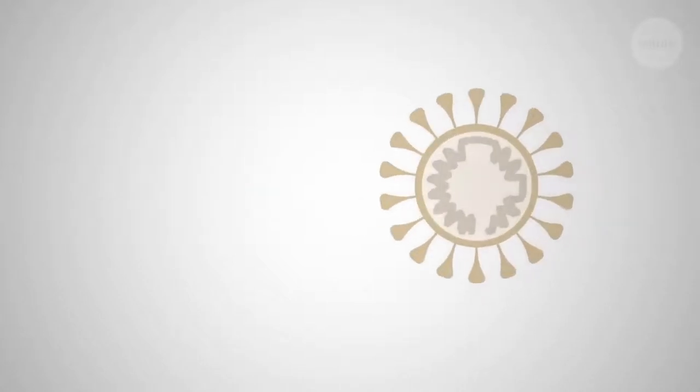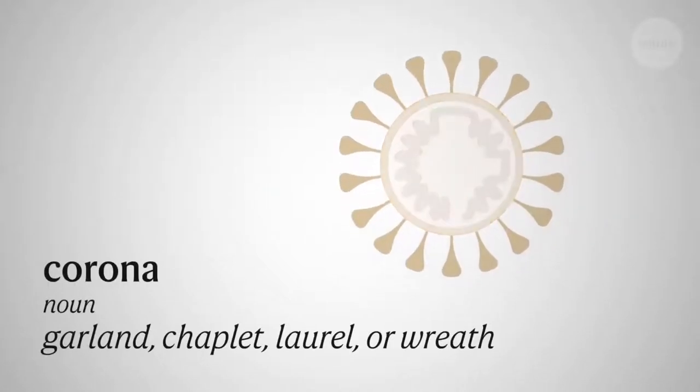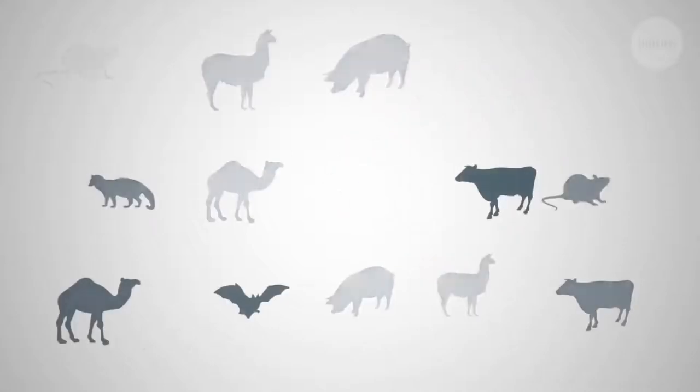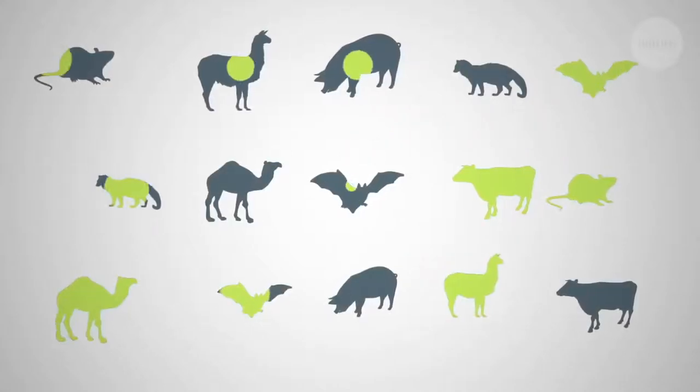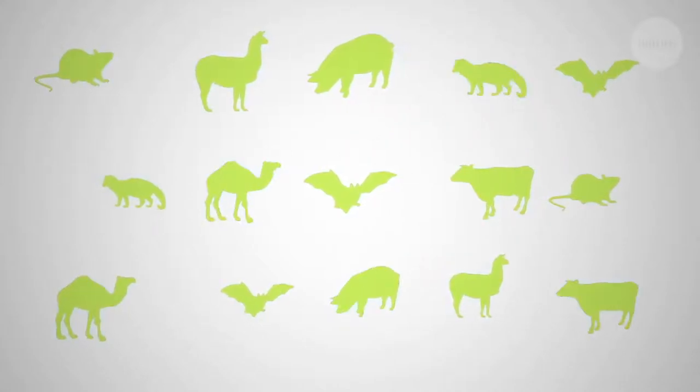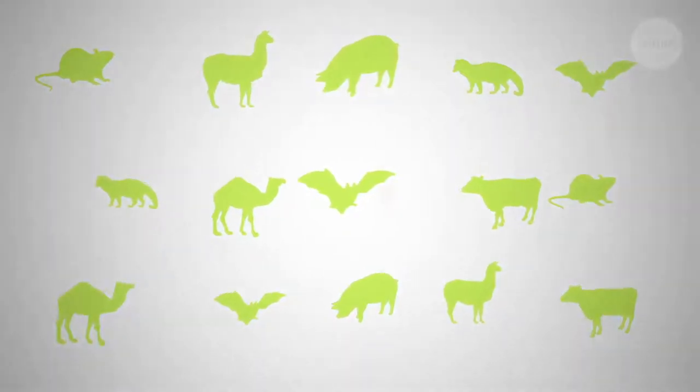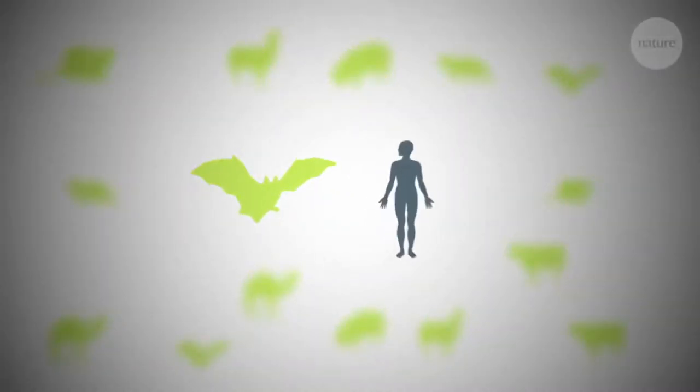Corona refers to the virus's distinctive shape. They are a large group common among mammals and birds. But in rare cases like this one, they can spread to humans, a process known as zoonosis.